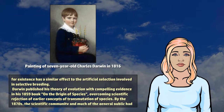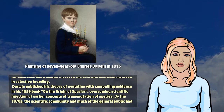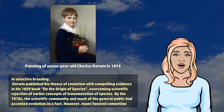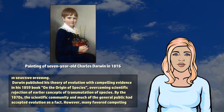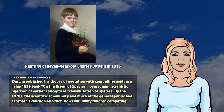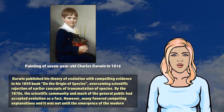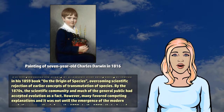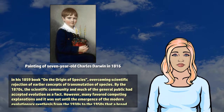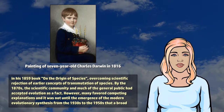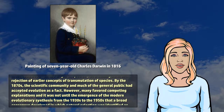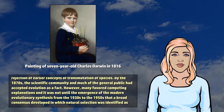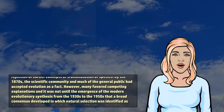Darwin published his theory of evolution with compelling evidence in his 1859 book On the Origin of Species, overcoming scientific rejection of earlier concepts of transmutation of species. By the 1870s, the scientific community and much of the general public had accepted evolution as a fact.